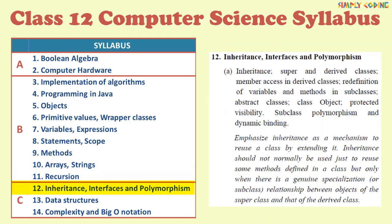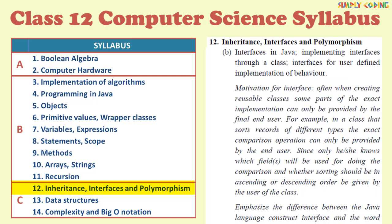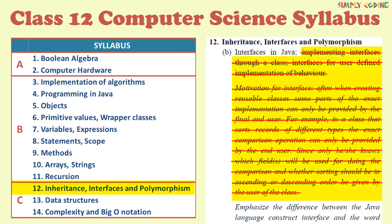Now we come to section C. This is where there is major reduction. In inheritance, interface and polymorphism there are two subsections. First is subsection A on inheritance and polymorphism which remains the same as is. The subsection B on interface now remains only in conceptual level, that means you need to know only concept of it but no program will come on it in exam.